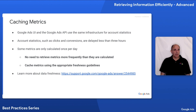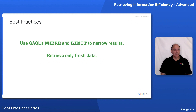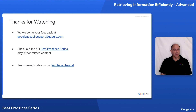We recognize that segmentation is a big topic, and we'll be covering that in other episodes in this series. In summary, there are two key best practices to retain: first, use the WHERE and LIMIT clauses to narrow results to only what you precisely need; second, be aware of the freshness of the metrics you are retrieving. We welcome your feedback and comments by email. Be sure to check out the full Best Practices series and extensive additional content on our YouTube channel. Thank you so much for listening.